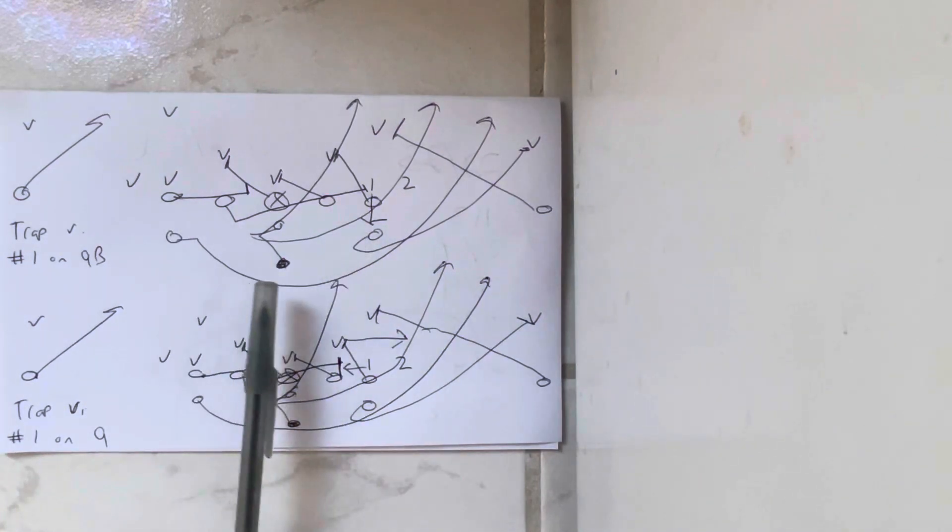Quarterback opens up by triple left. B back takes the ball, bends back, and that's that. That was the whole reason why they ran trap.